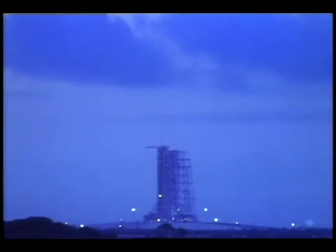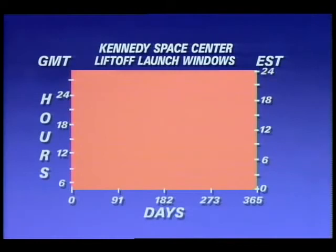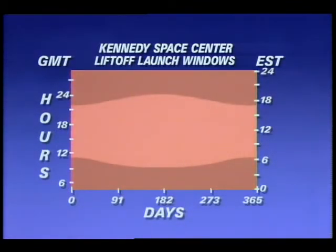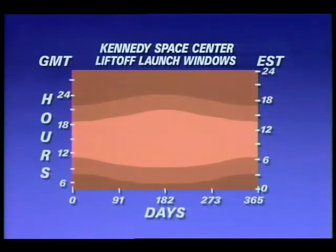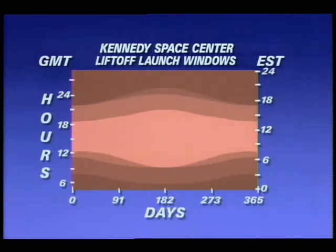One of the factors defining the launch window for the Space Shuttle is launch lighting conditions, which can be illustrated by plotting time versus day of year. On this plot we see daylight and darkness at the launch site. The longer daylight hours occur in the middle of the year — summertime. If daylight conditions are required for a convenient emergency landing site for the Space Shuttle, the launch window would now look like this. During the winter months, the available launch window for lighting conditions alone can be as little as three hours per day. When combined with the many other launch factors, the launch window becomes even more constrained.